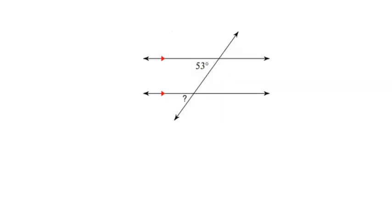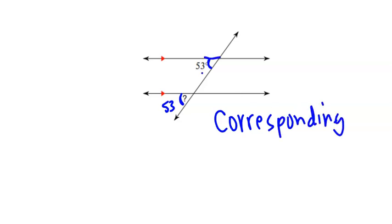In this drawing, this acute angle and this acute angle are congruent because all acute angles are congruent in this diagram. But the reason why this angle and this angle are both 53 degrees is because they are corresponding. Corresponding angles, when translated along this transversal, would perfectly overlap.